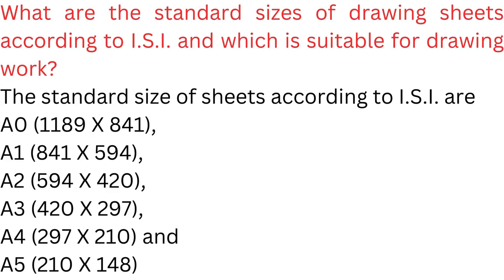What are the standard sizes of drawing sheets according to ISI, and which is suitable for drawing work? The standard sizes of sheets according to ISI are A0, A1, A2, A3 (420 by 297 mm), A4 (297 by 210 mm), and A5 (210 by 148 mm).